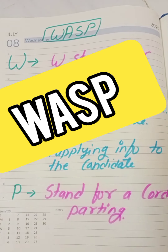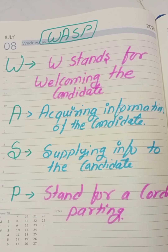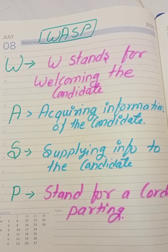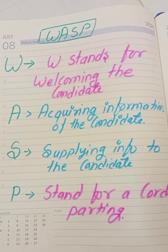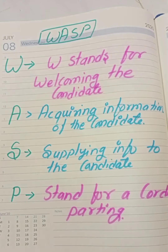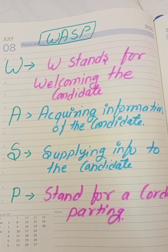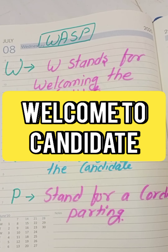My friend's topic is WASP — W-A-S-P. What is WASP? The entire procedure of conducting an interview may be condensed into a single word, a whole process in three or four letters. That is called WASP — the entire procedure in one word, four letters, one word. It stands for Welcoming, Acquiring, Supplying, and Parting.